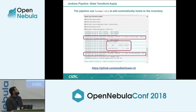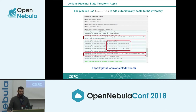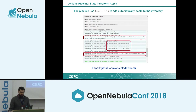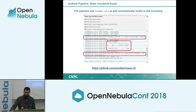Jenkins Pipelines uses Tower CLI to add the newly created host to the AWX inventory. Then we define which role this new instance will have in order to install or configure its specific packages.